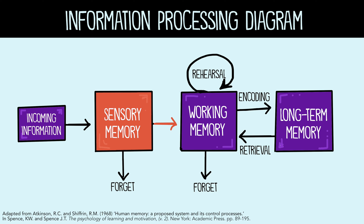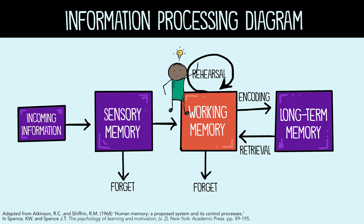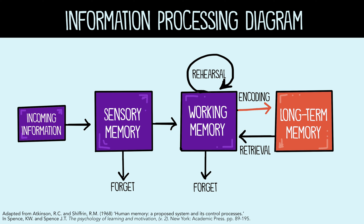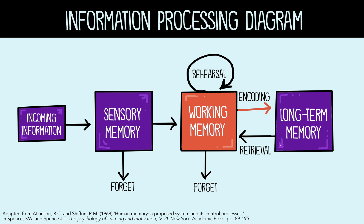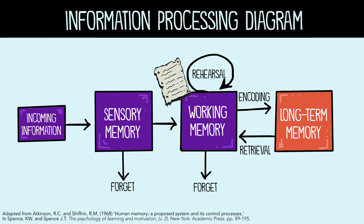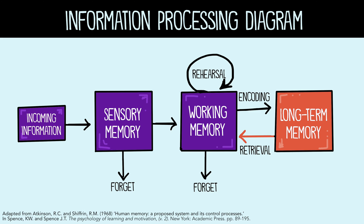But some of the information moves to working memory, which is what we are thinking in the moment. Here, the information is either forgotten or moved into long-term memory through a process called encoding, where the brain categorizes the information. We can help ensure information moves from working memory to long-term memory through a rehearsal process — like repeating a phone number, paraphrasing information, or putting events into a sequence.